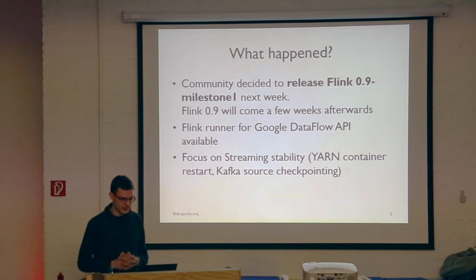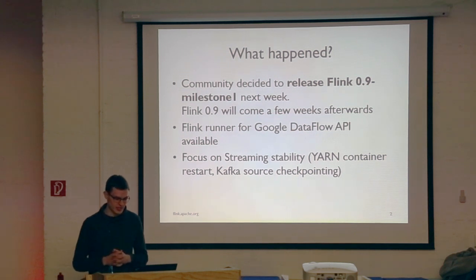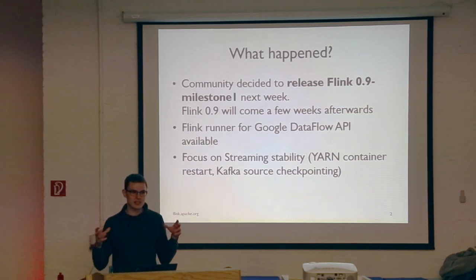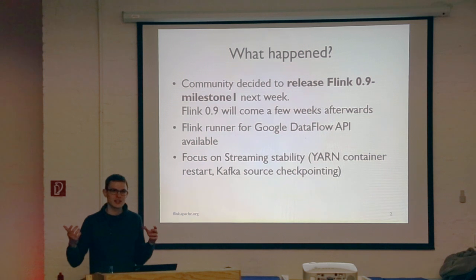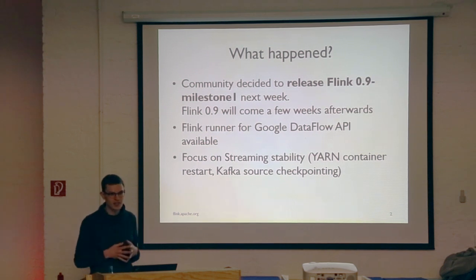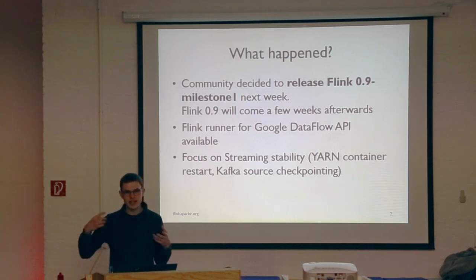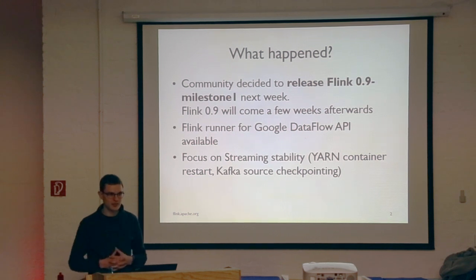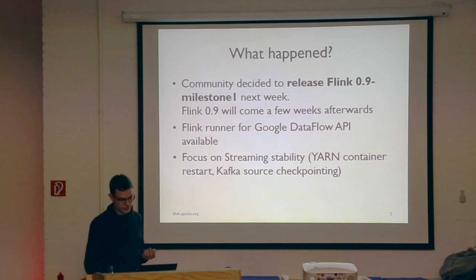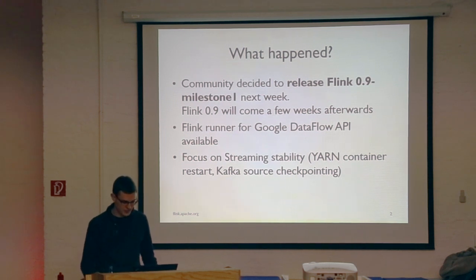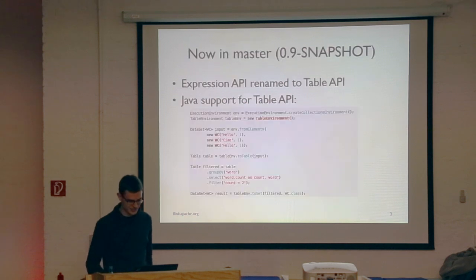We also focused a lot on streaming stability and fault tolerance. We now have experimental support for Kafka source checkpointing, which means that when you're running a streaming job from a Kafka source and the job fails, Flink is aware of the latest completely processed record from the Kafka source. We can pick up from there and continue processing from that last known stable checkpoint. We also added support within YARN to reallocate failed containers and maintain the number of requested containers in the YARN cluster. We also reworked a lot in the low-level network API and runtime for the batched execution runtime, but Stefan will explain that later in the main talk.